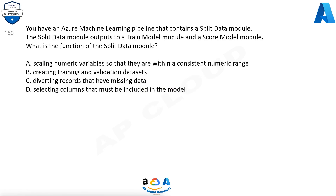You have an Azure Machine Learning pipeline that contains a Split Data module. The Split Data module outputs to a Train Model module and a Score Model module. What is the function of the Split Data module? A. Scaling numeric variables so that they are within a consistent numeric range. B. Creating training and validation data sets. C. Diverting records that have missing data. D. Selecting columns that must be included in the model.